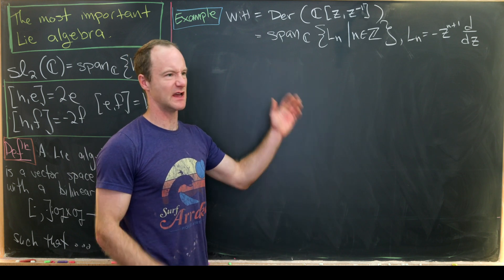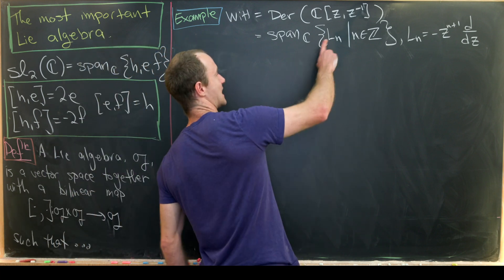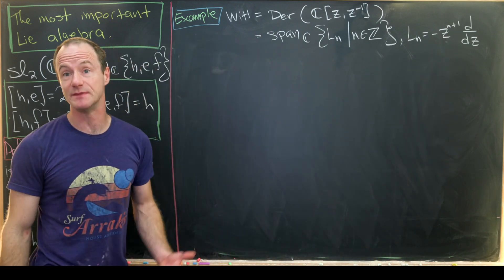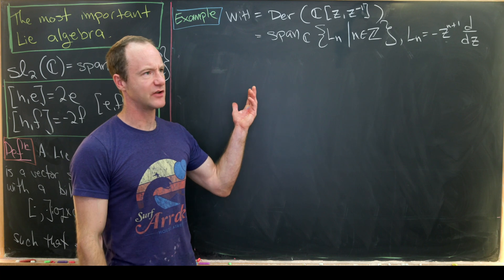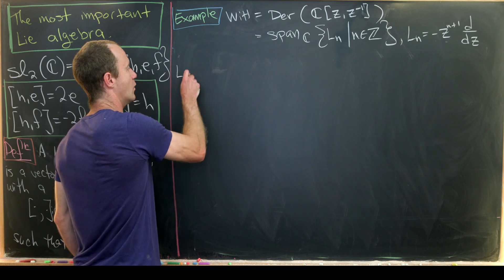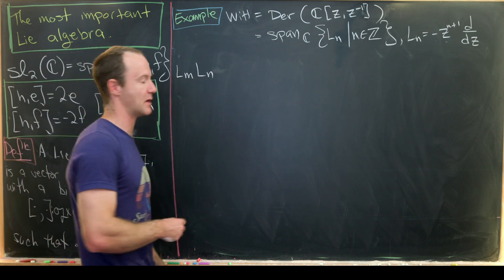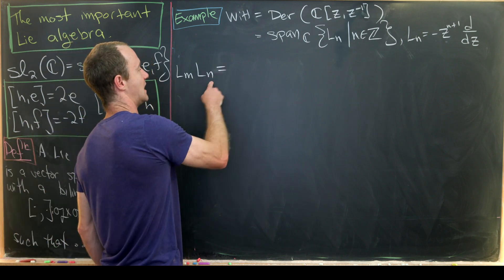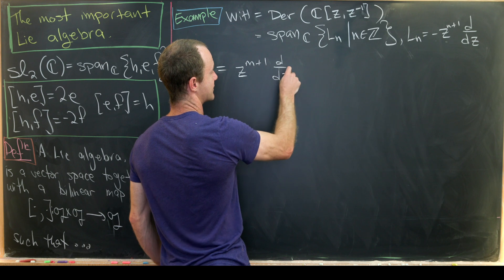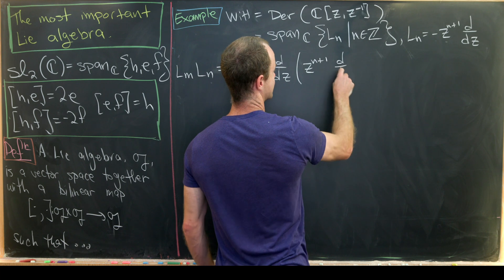In that video we constructed a basis and found commutation relations for those basis elements. Recall that the basis is given by the operators Lₙ = −z^(n+1) d/dz. You need that derivative in there to be a derivation. Let's quickly re-derive the commutation relations by composing two of these operators: Lₘ Lₙ = z^(m+1) · d/dz applied to z^(n+1) · d/dz.